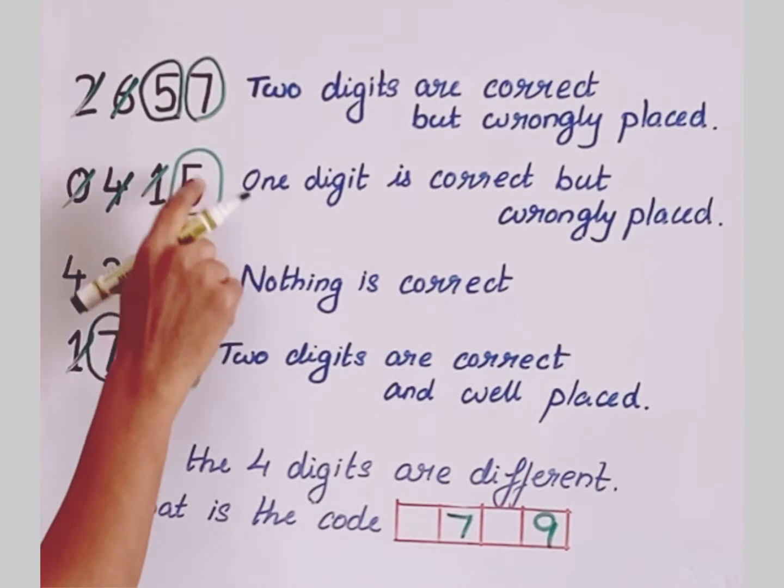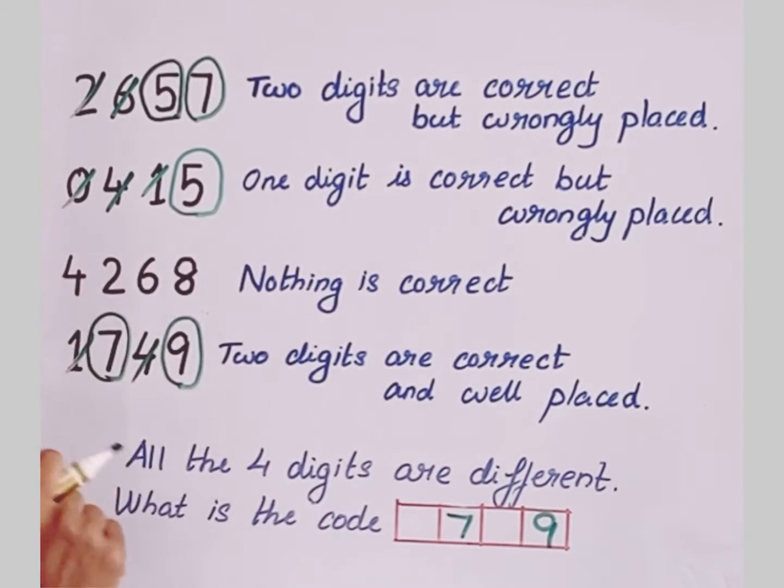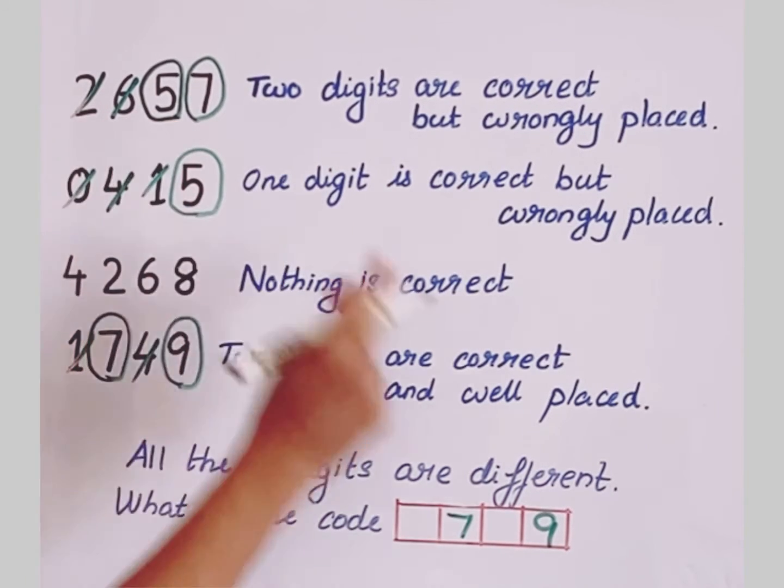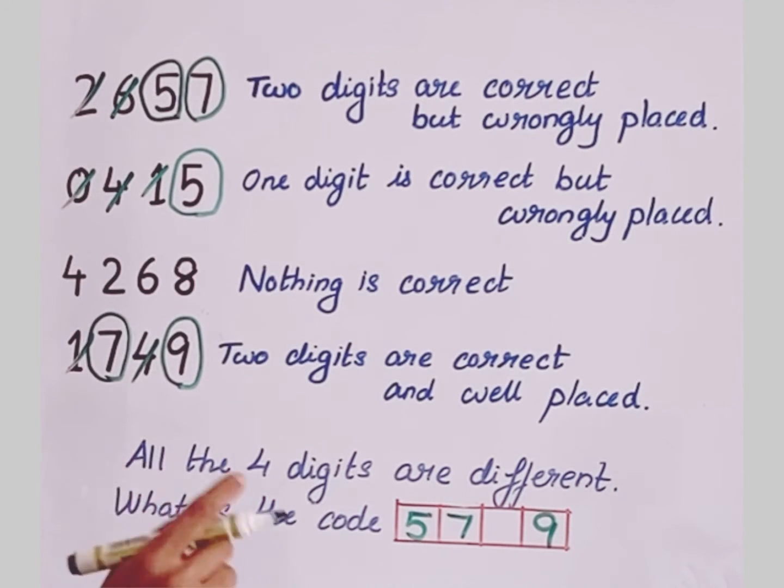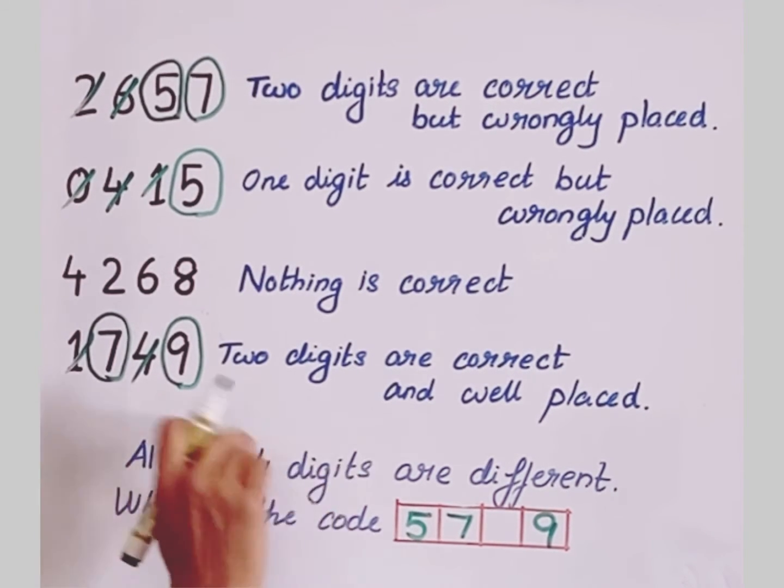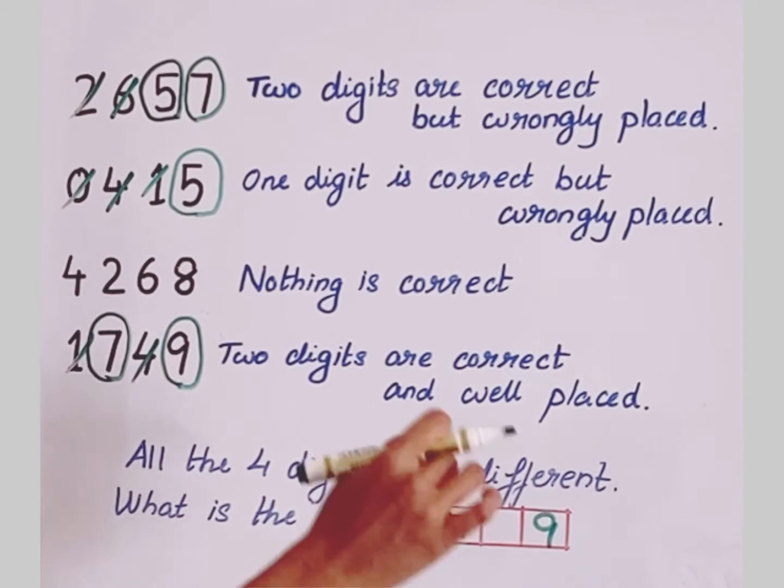Now coming back here, 5 we have to place. If 5 is not in this position or in this position, that is the remaining position here. So now we have got three digits in our code. What about this remaining digit here? So as it is said that all the four digits are different...